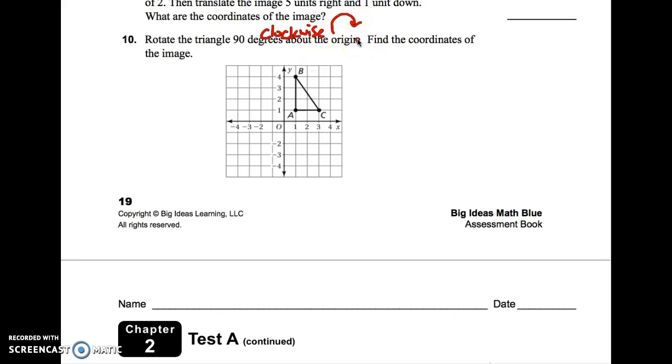Now we took our transparency. We laid it down over this graph. Trace the x-axis, trace the y-axis, and then trace your triangle here. Now I also want you to make sure you label these points A, B, and C so that when we rotate it, you know exactly where A prime, B prime, and C prime should be located.